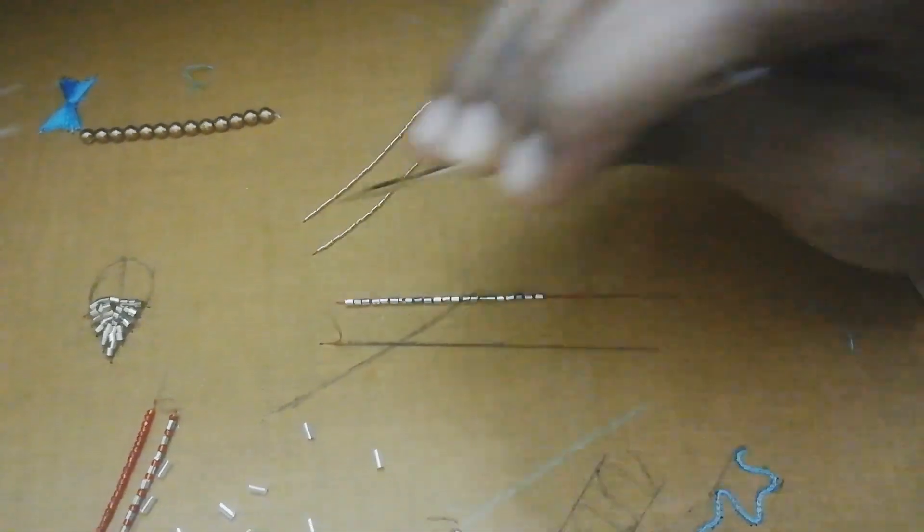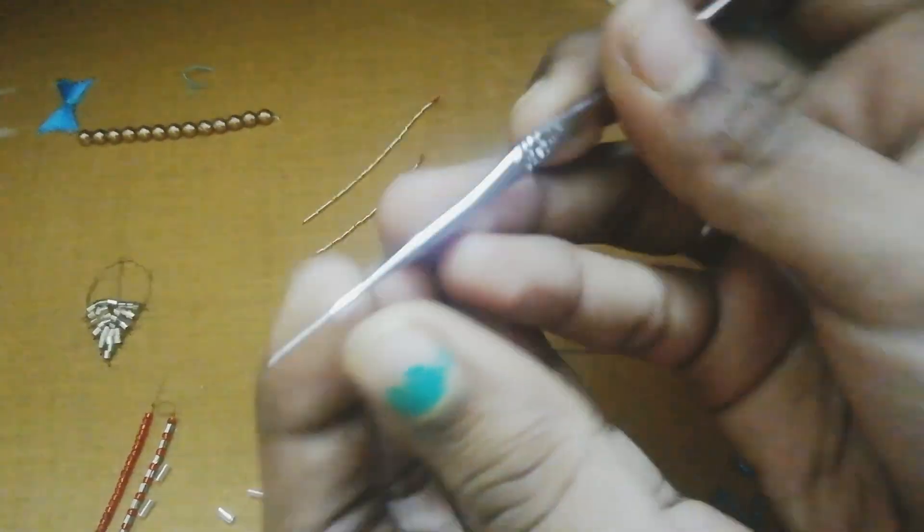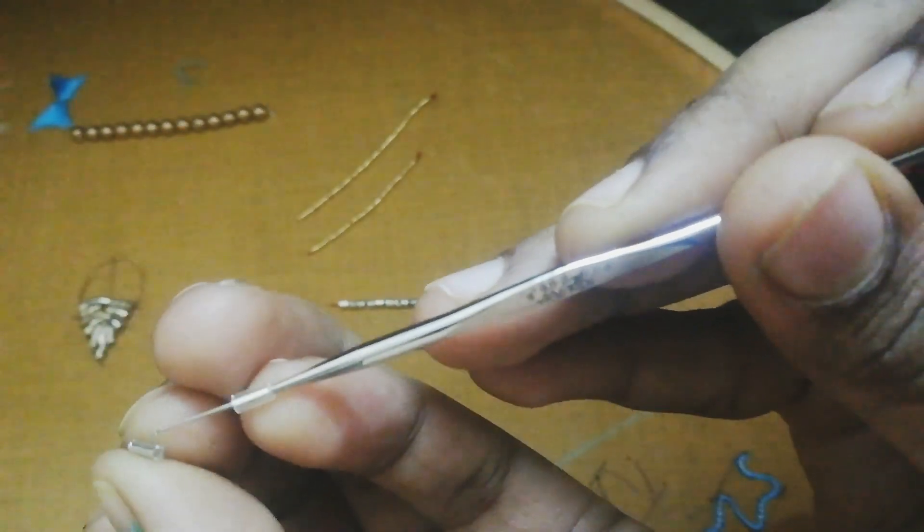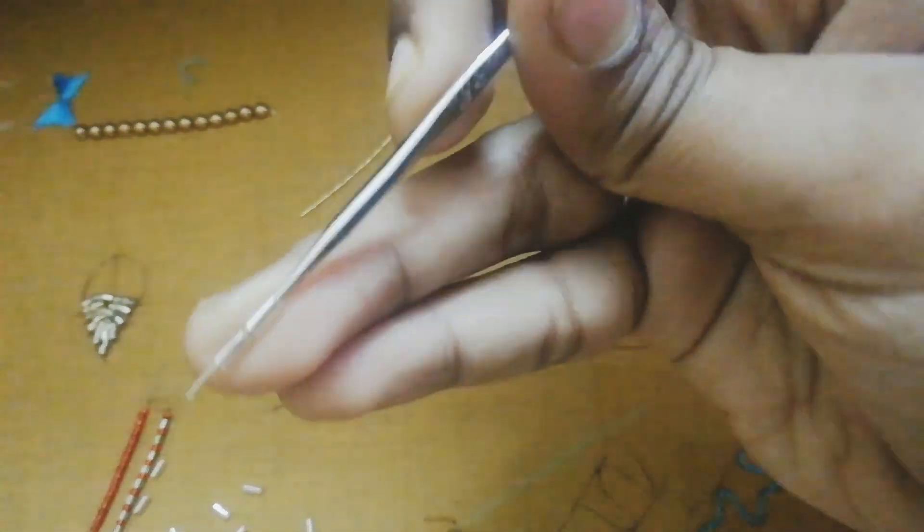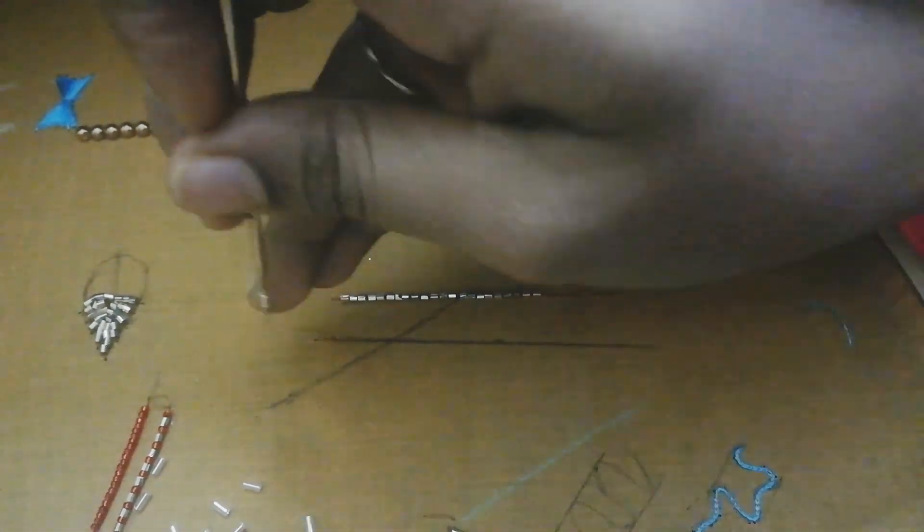Backstitch and draw a line. You can start with 2 tube beads. You have to stitch one tube bead.